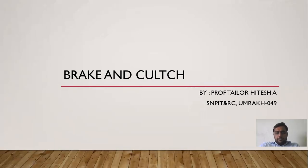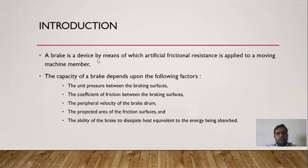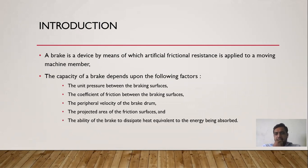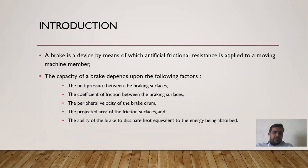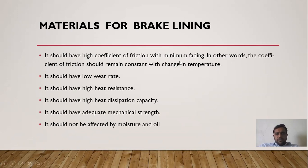In the previous lecture, we discussed what brakes are. Brakes are the artificial friction and resistance applied to moving machines and members. A brake is a device to retard and stop the motion of a vehicle. The capacity of brakes depends on the following factors: unit pressures between the braking surfaces, coefficient of friction, velocity of the brake drum, projected area, and ability to dissipate heat. We also discussed the material for brake lining.